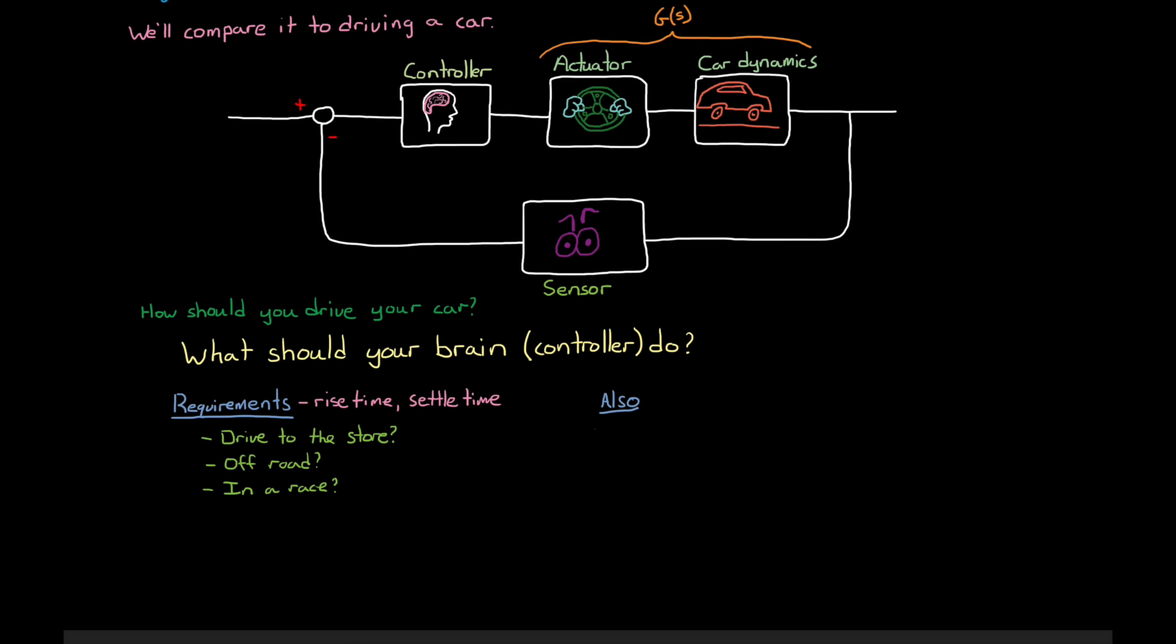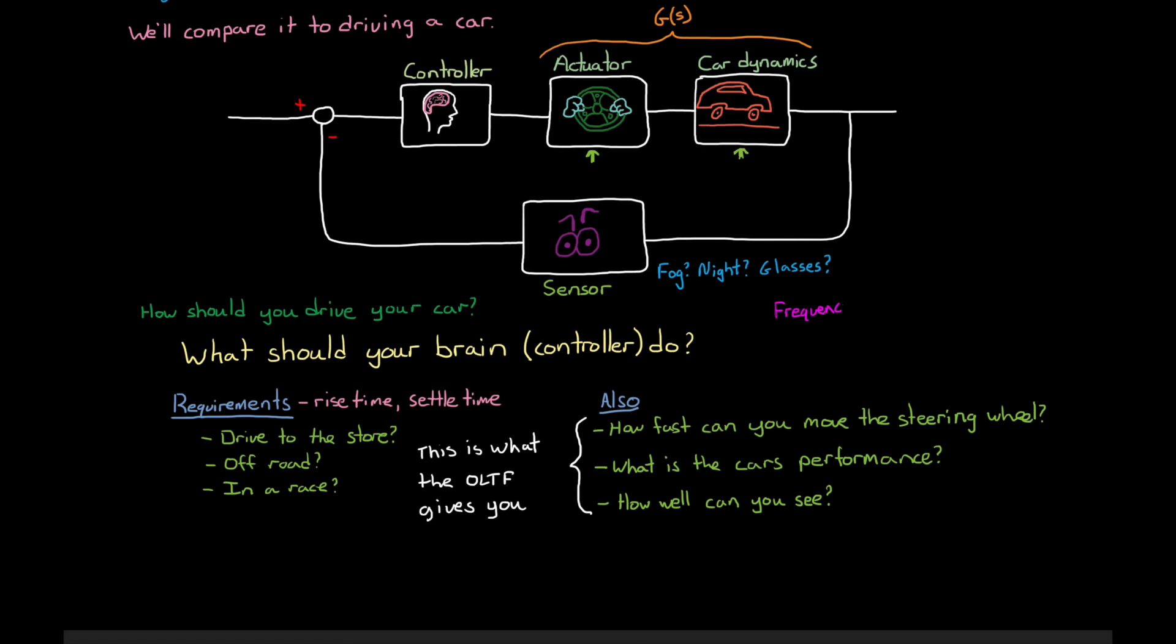But knowing how you want to drive is only part of the story. You also need to know the capability of the car itself. For example, how fast can you turn the steering wheel, which is captured in the actuator block. And what is the car's ability to perform, which is captured in the car dynamics block. The combination of these two blocks give you what you and the car are capable of doing. You could jerk the wheel hard and turn the car very fast. And if you were in a race with tight turns, this might be exactly what you want to do. But you would be crazy to not take into account your own ability to see when deciding how to drive. I mean, maybe there's fog, or it's night time, or you forgot your glasses. All of these are reasons to not drive the car as hard as you may have wanted to. And this is what the open-loop transfer function gives you. It takes into account the entire system, so you know exactly what you're dealing with. And the frequency design methods, like Nyquist and Bode and Root Locus, use the open-loop transfer function to decide what your brain, I mean the controller, should do.